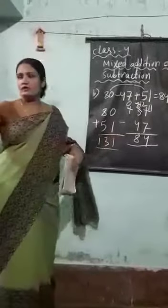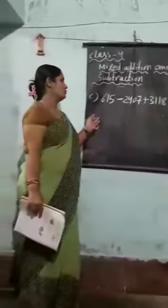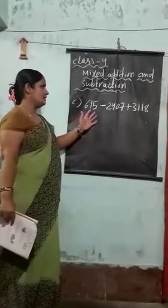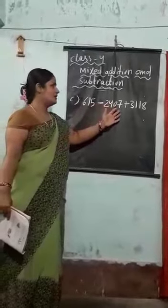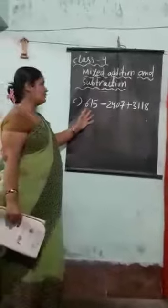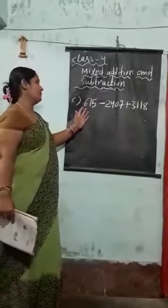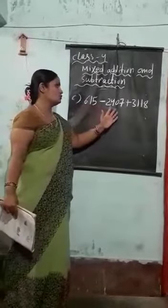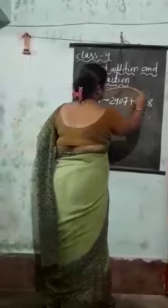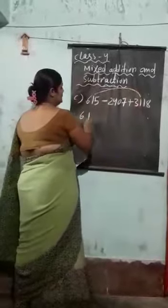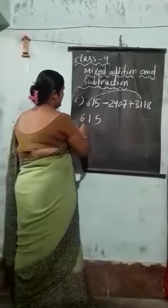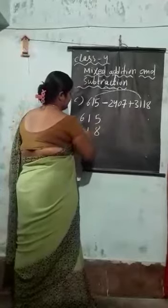Students, just look at the blackboard. Here is another example: 615 minus 2407 plus 3118. You can see here we have to follow the process. If I subtract 615 minus 2407, I cannot do it. That's why I will do addition first. So, 615 plus — and this is a 4-digit number — 3118.